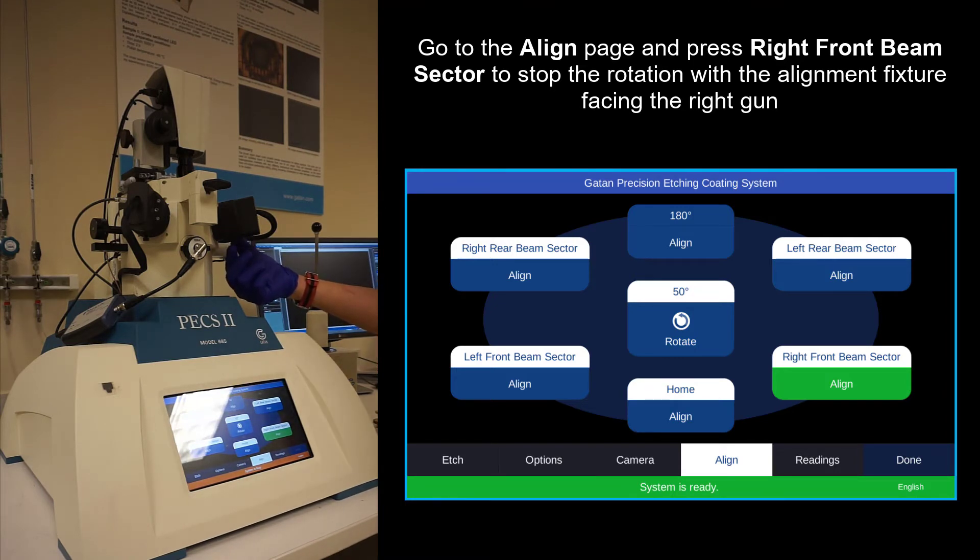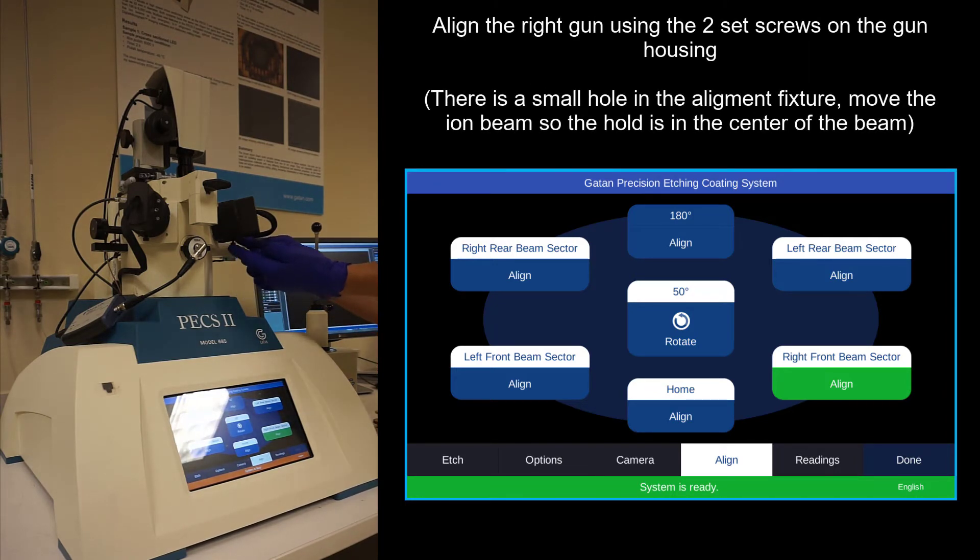And you will align the gun with these two set screws here. This is a vertical, this is a horizontal, and we'll get a picture of that so we can see what a properly aligned gun looks like.